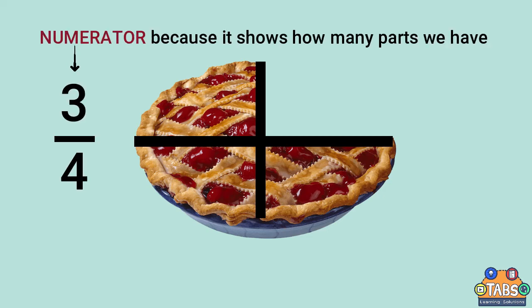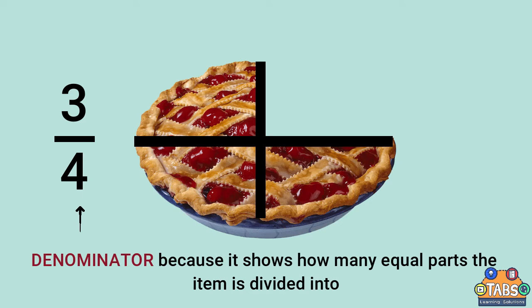3 is the numerator because it shows you how many parts we have. 4 is the denominator because it shows how many equal parts the item is divided into.